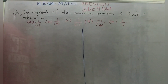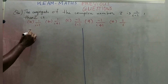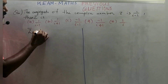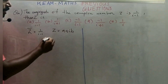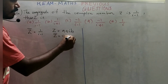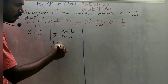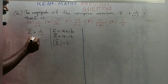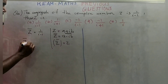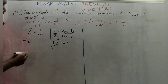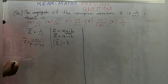Moving on to the next question: the conjugate of complex number z is 1/(i - 1). We need to find z. Given z̄ = 1/(i - 1), we find z̄ by multiplying numerator and denominator by (i + 1): z̄ = (i + 1) / ((i - 1)(i + 1)).